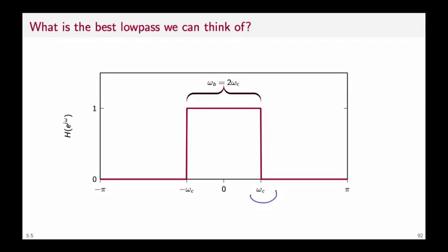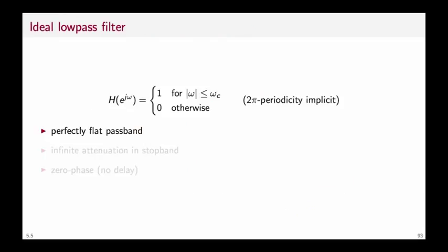If we call ω_C the cutoff frequency, where the frequency response transitions from 1 to 0, we can say that the ideal lowpass has a bandwidth ω_B which is equal to twice ω_C. Formally, we can write the frequency response of the ideal lowpass H(e^jω) is equal to 1 for ω between minus ω_C and plus ω_C and 0 otherwise. And remember, whenever we write a specification like this, we tacitly imply the 2π periodicity of any frequency response. So this means that the ideal lowpass has a perfectly flat pass band which is identical to 1, has infinite attenuation in the stop band and again has 0 phase and no delay.